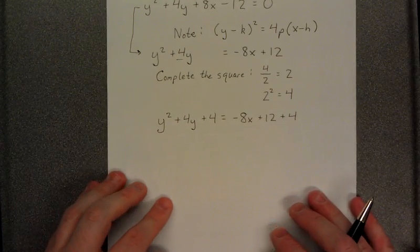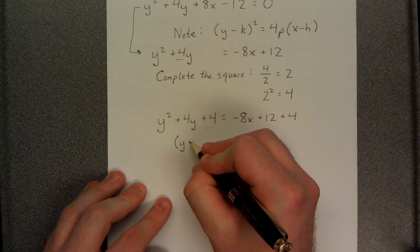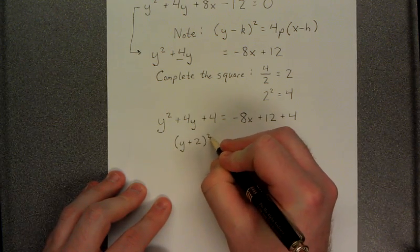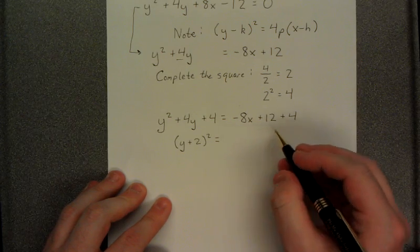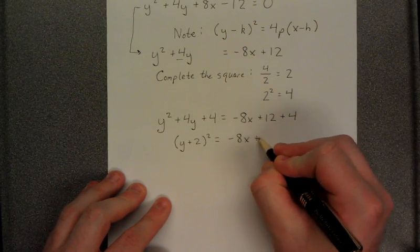Next, we'll factor the left-hand side as it is now a completed square. This would be y plus 2, quantity squared, is equal to... Combining like terms on the right-hand side, we have negative 8x plus 16.